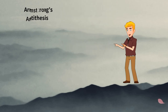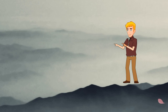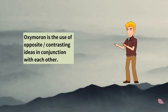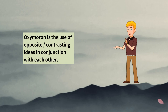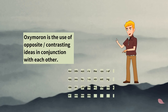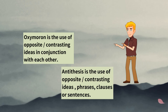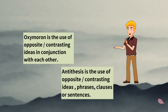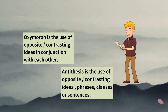Oxymoron is defined as the use of opposite or contrasting ideas in close conjunction with each other. While antithesis is the use of opposite or contrasting ideas, phrases, clauses, or sentences for two different entities.